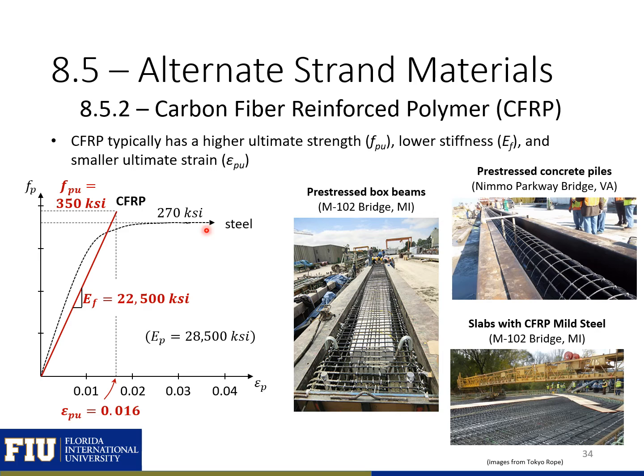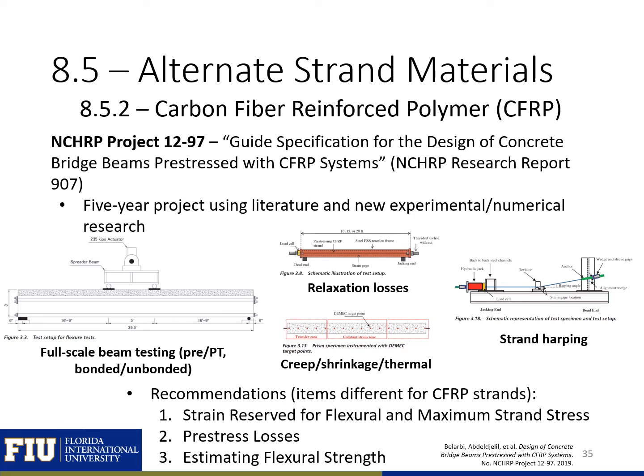Some example projects using CFRP have been completed by Tokyo Rope, including pre-stressed box beams, pre-stressed concrete piles, and different slabs, all with CFRP reinforcement and pre-stressing. Much of our design knowledge for structures with CFRP strands comes from NCHRP project 12-97, where researchers over five years performed a literature review and experimental and numerical research with full-scale beam testing, looking at relaxation losses, creep, shrinkage and thermal losses, and issues surrounding strand harping.